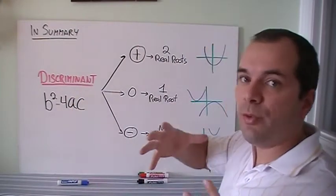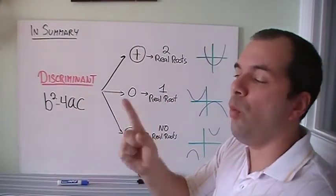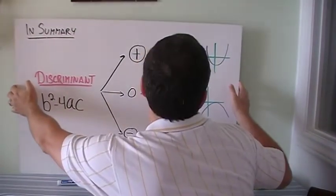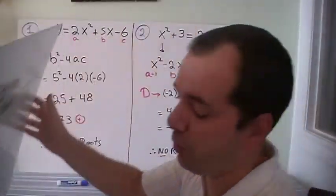This discriminant just gives you those answers, either two, one, or zero. It doesn't tell you what the zeros are. In order to find out what the zeros are, you want to do quadratic formula.